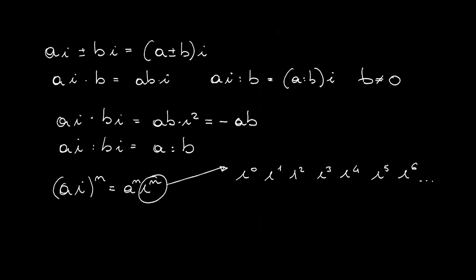i^0, like any number to the power zero, equals 1. i^1 equals i. i^2 equals -1. i^3 equals -i. i^4 equals 1. i^5 equals i. i^6 equals -1, and so on. The sequence continues periodically for other integer values of the exponent.